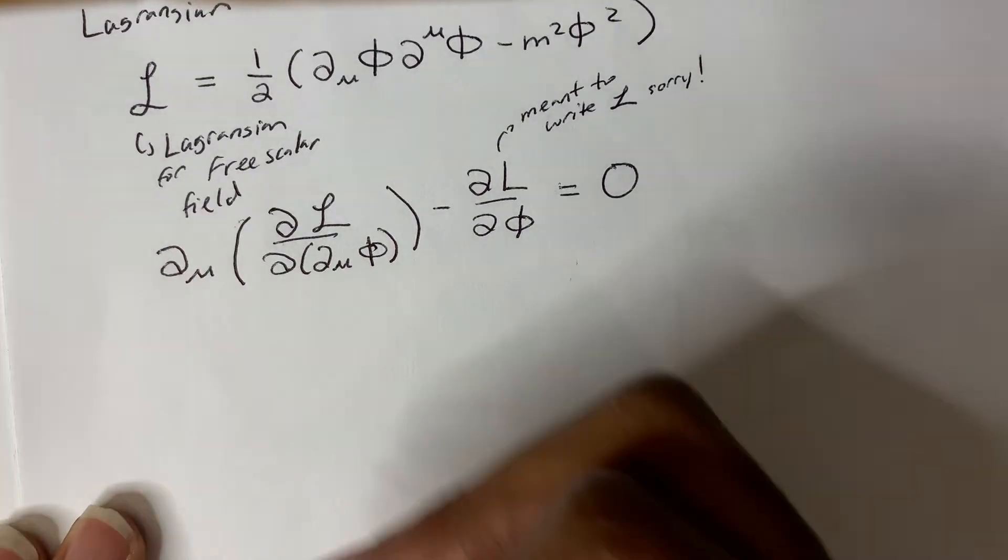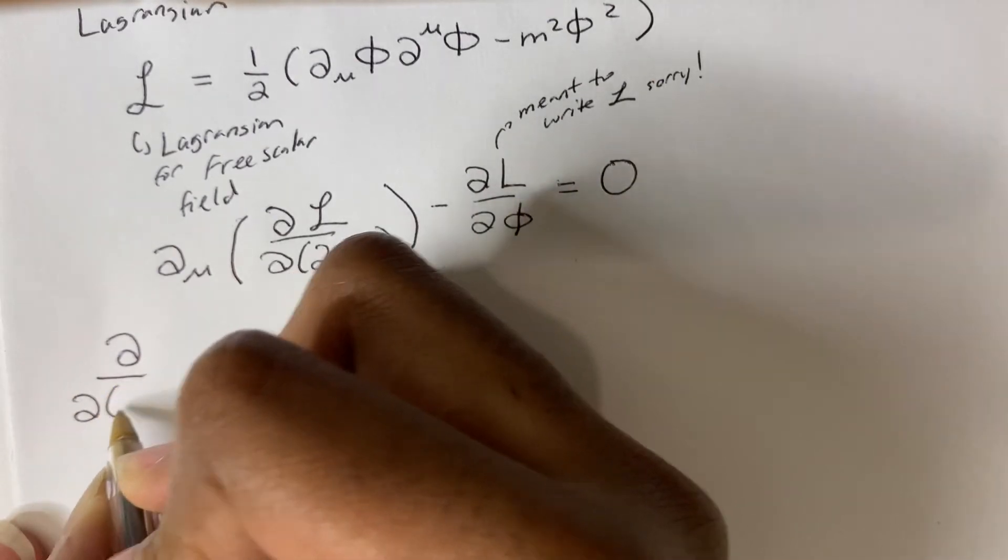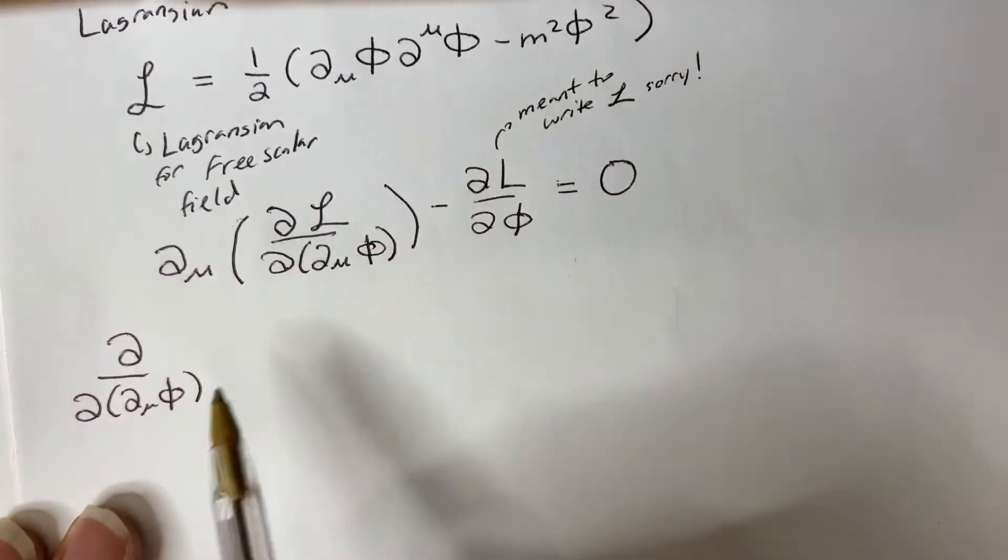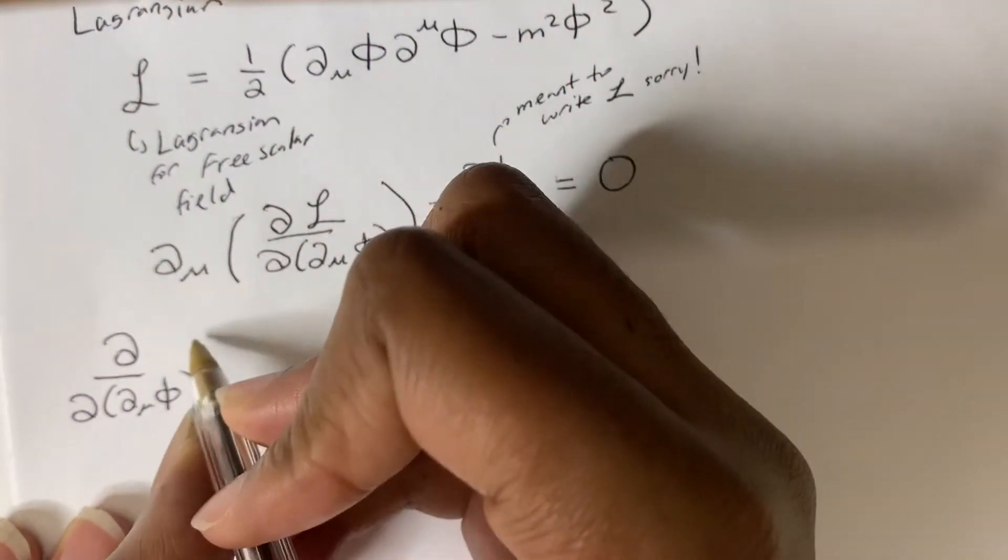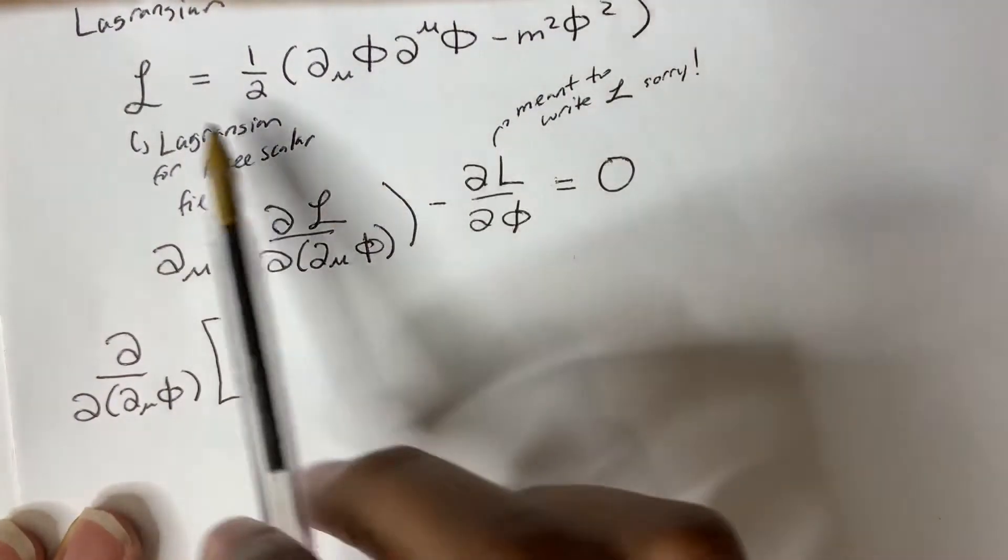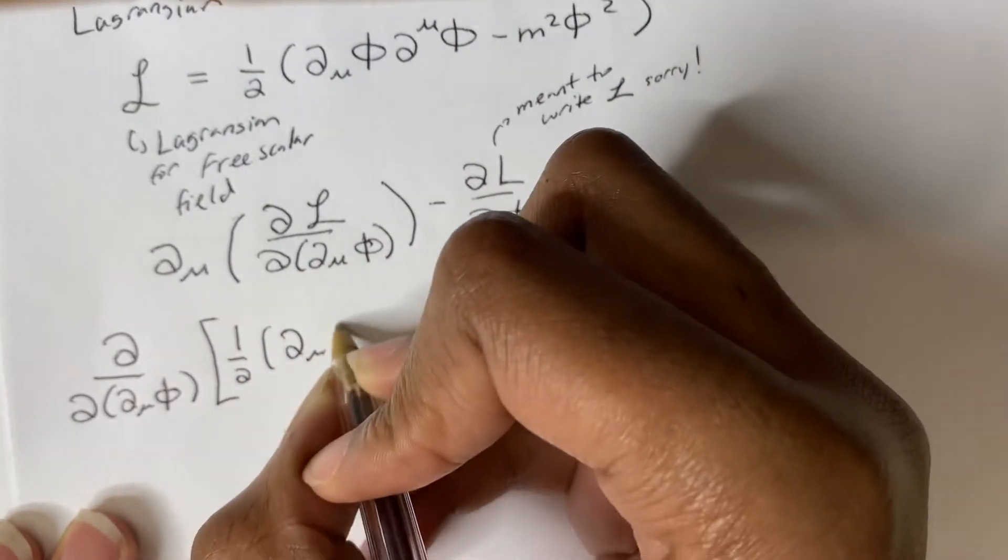So what we should do first is take the partial derivative of the Lagrangian with respect to our scalar field phi. So the Lagrangian is this. So this is just one-half times partial mu phi.